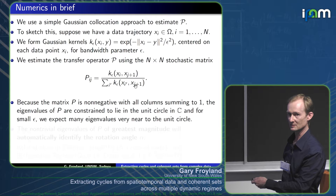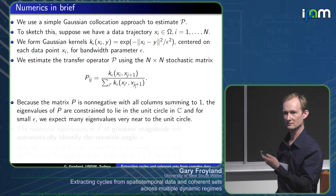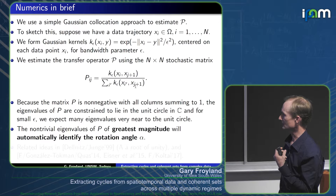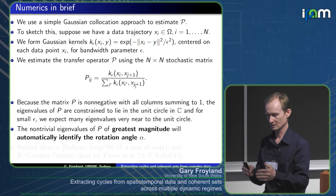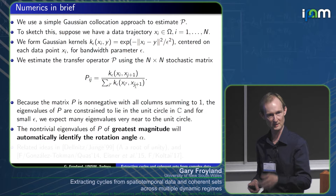All eigenvalues must be inside the unit circle. We look at the non-trivial eigenvalues of this matrix with the greatest magnitude — the one closest to the unit circle represents the most long-lived cycle.